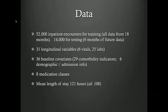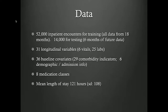We looked at 52,000 inpatient encounters for training — all the data we had here at Duke from the last 18 months — and 14,000 for testing, representing the last six months. We had 31 longitudinal variables: six vitals and 25 labs, 36 baseline covariates including 29 comorbidity indicators and six demographic covariates, and eight different classes of medication.